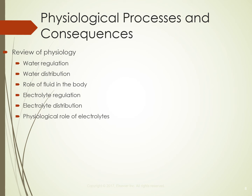Water cushions the brain, spinal cord, and other tissues, and is important for regulating body temperature. The digestive system depends on it, and it flushes waste through urine and feces. Water also maintains blood pressure, and the airways need it — without adequate water, asthma and allergies can worsen. It makes minerals and nutrients accessible by dissolving them, prevents kidney stones, and carries nutrients to cells.